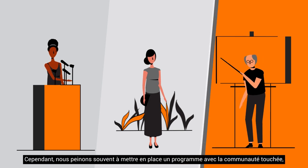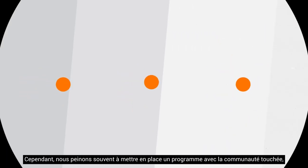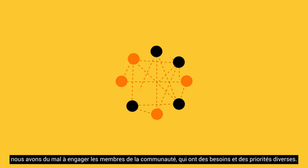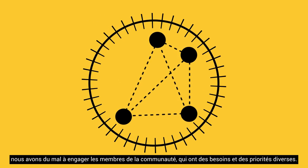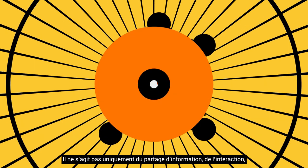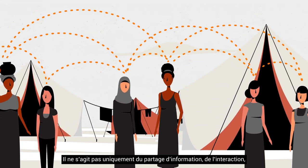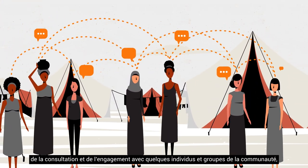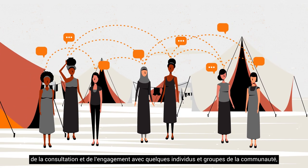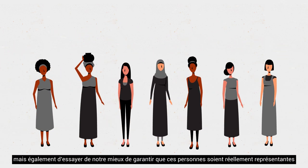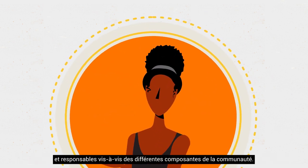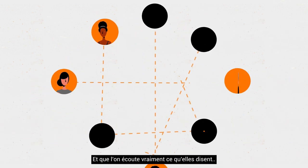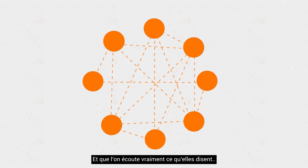But often we still struggle to design our programme with the affected community. We struggle to engage with community members that can represent diverse needs and priorities. It is not only about sharing information, interacting, consulting and engaging with individuals and groups from the community, but also trying to ensure that those people are really representative and accountable to different components of the community, and that we really listen to what they say.